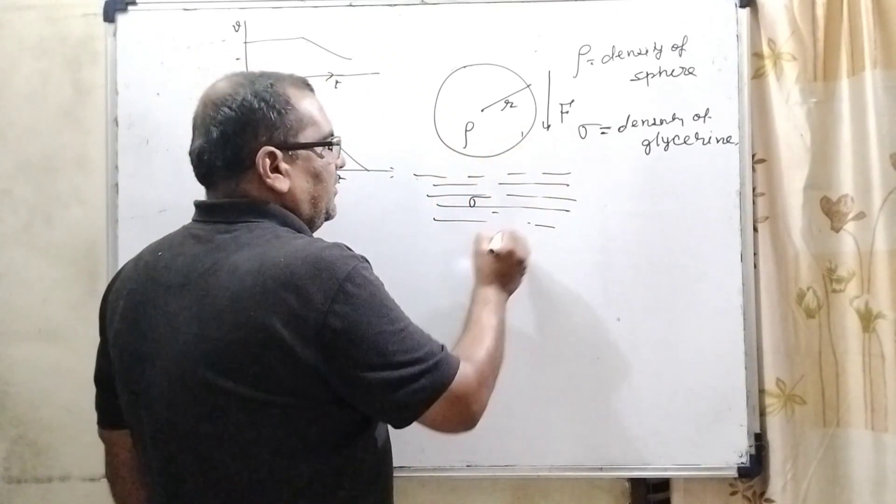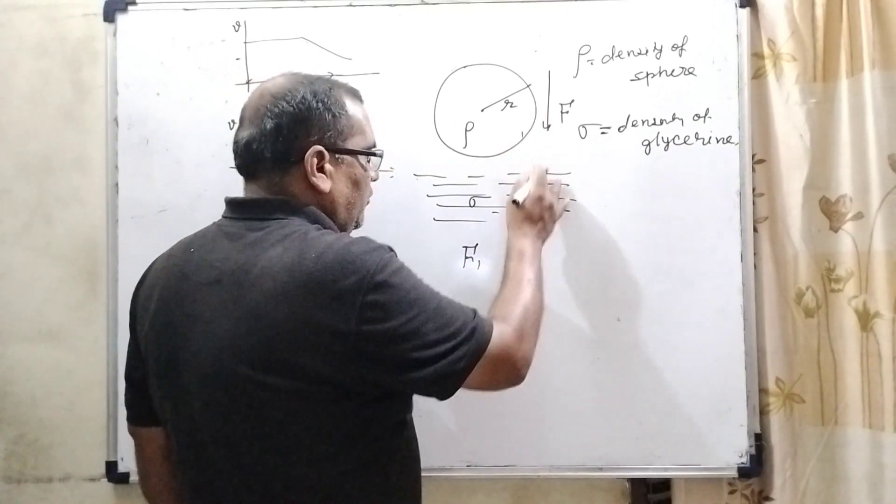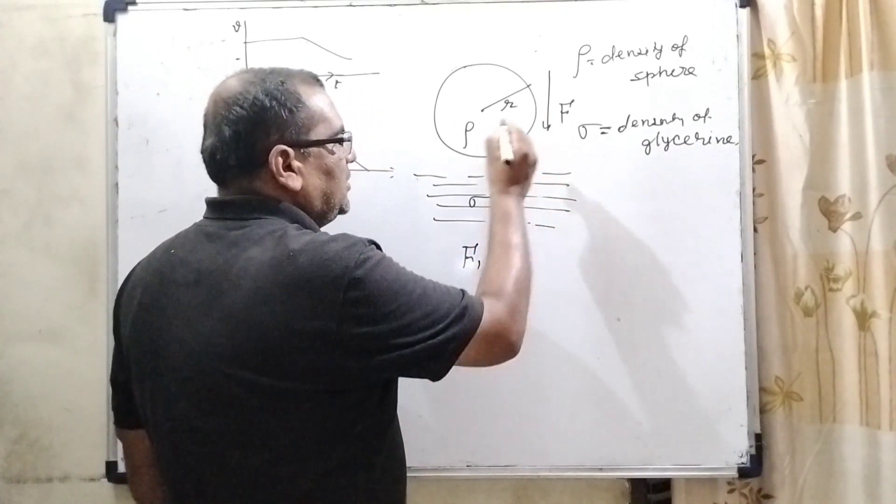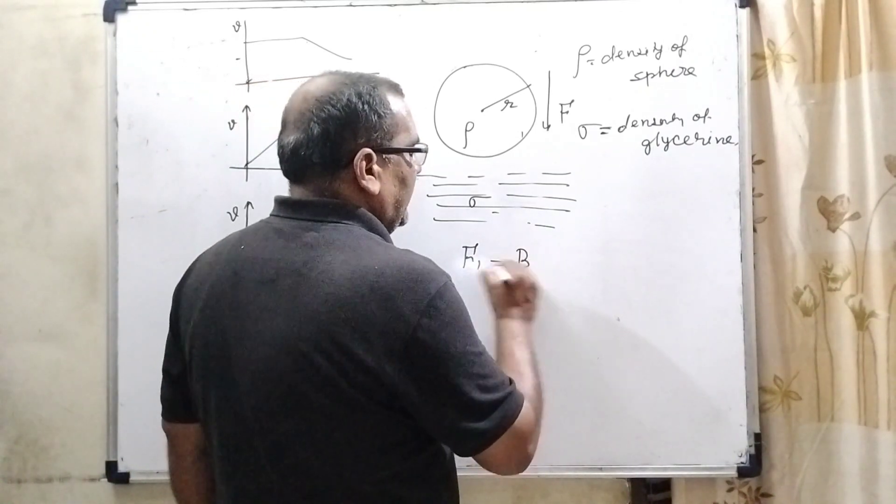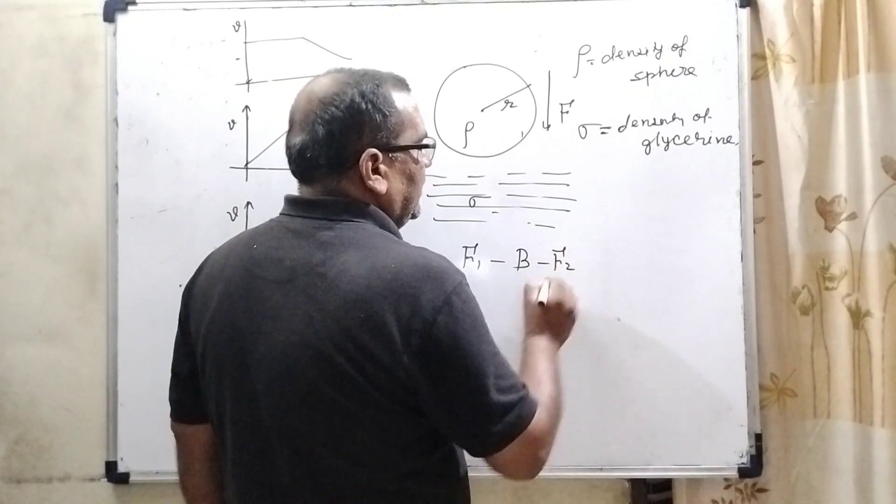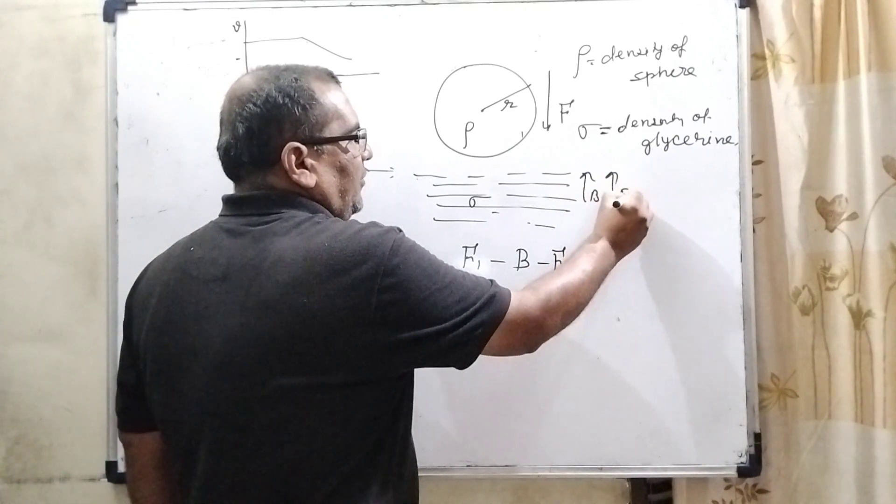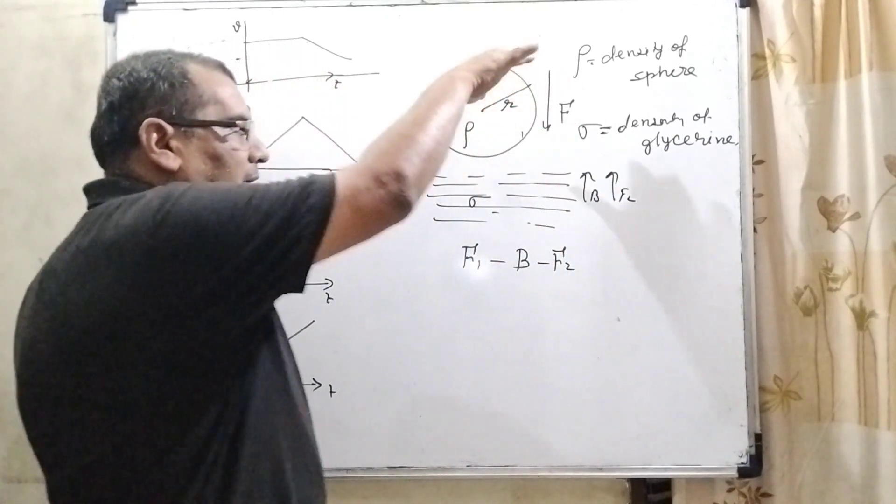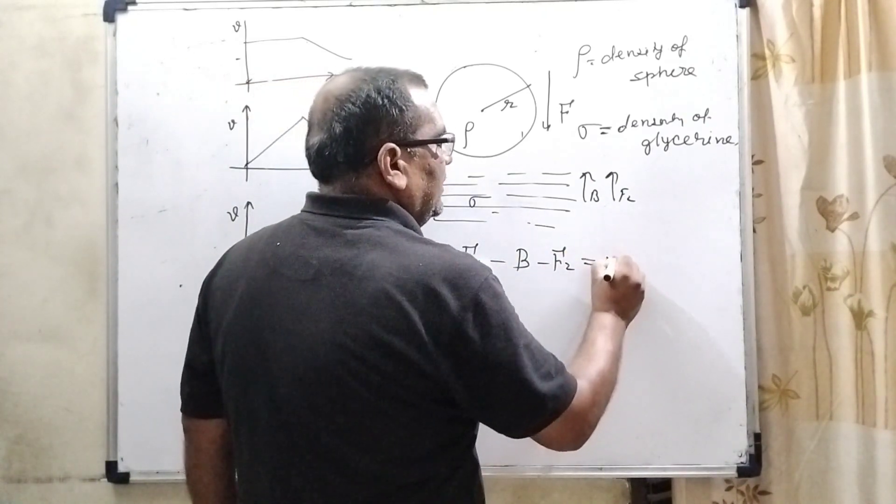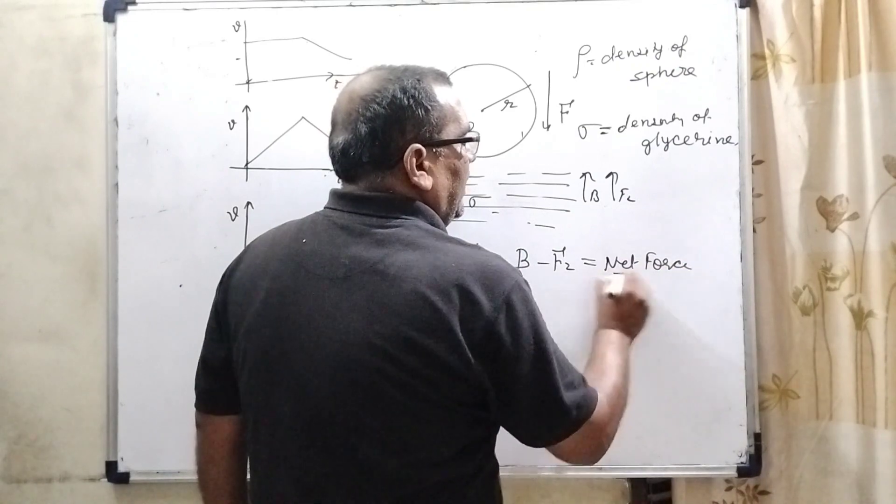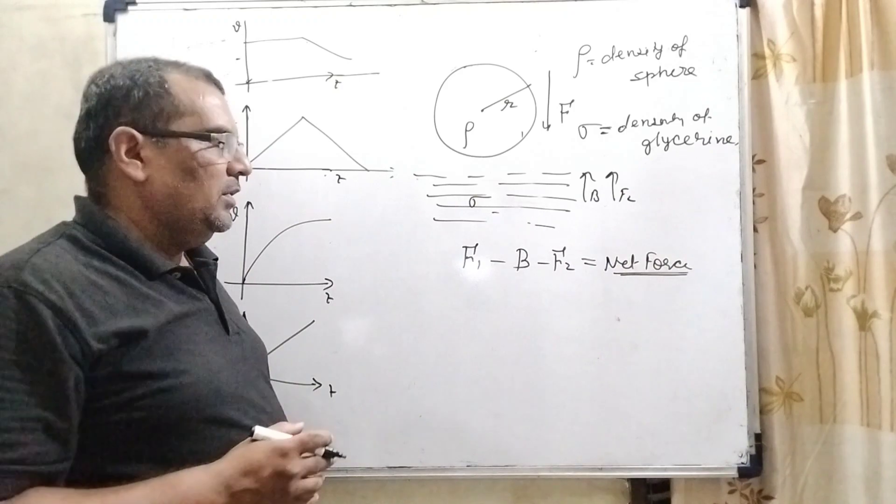So, after some time its velocity becomes constant. Here F1 is acting downward direction. Upthrust force for the liquid we are using buoyancy. So, buoyancy acting upward direction and viscous force F2 is acting upward direction. So, here two forces B and F2 acting upward direction and F1 falling down. Its result we get net force. And this net force due to this net force object falling constant velocity.